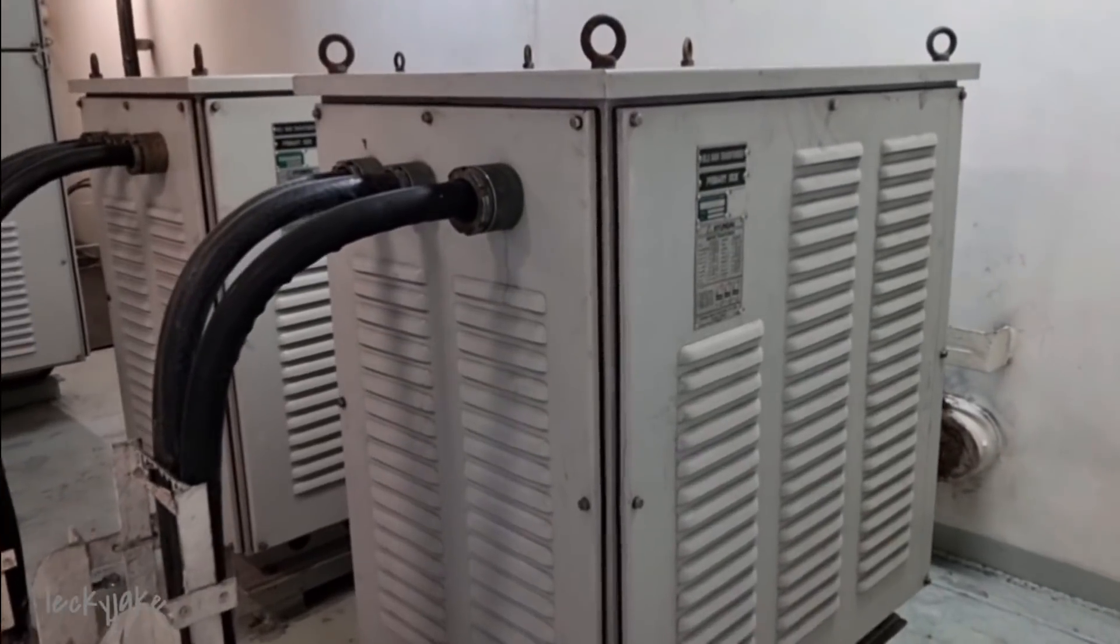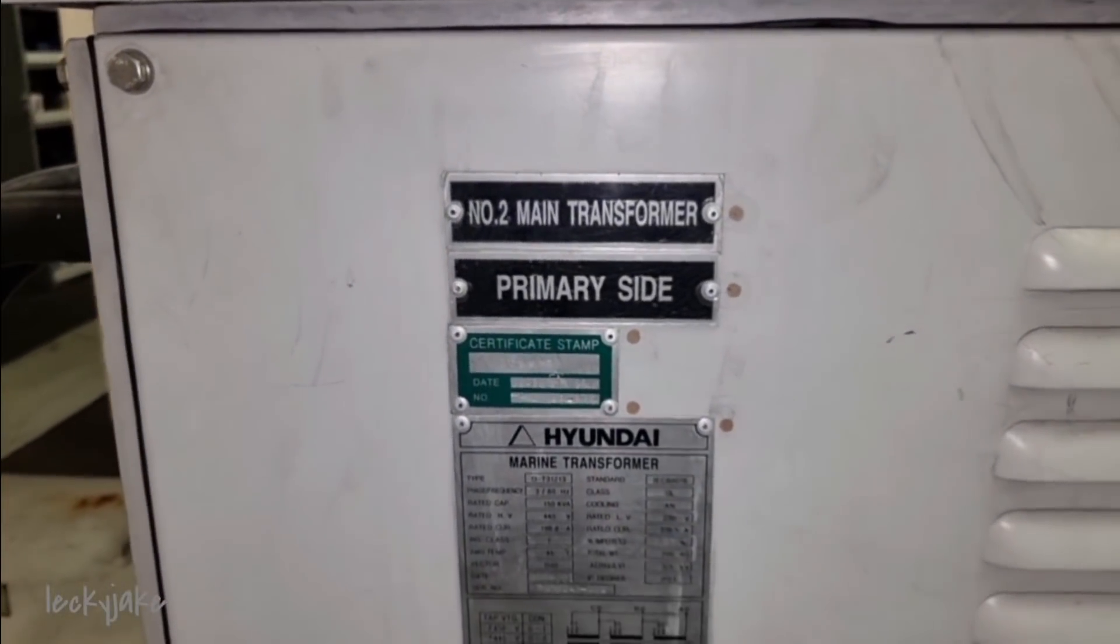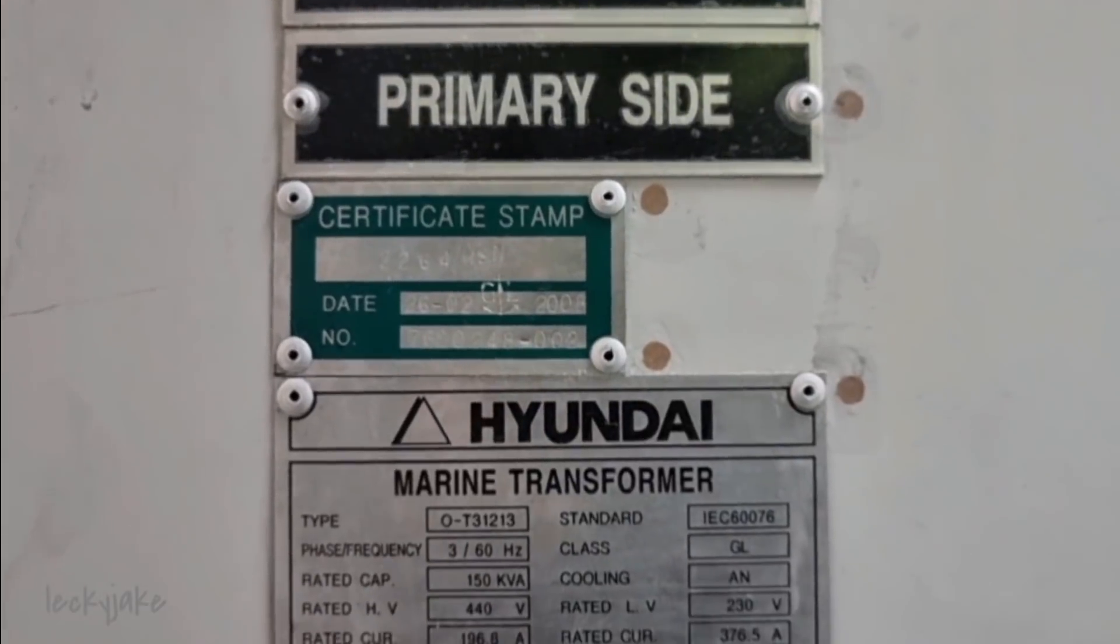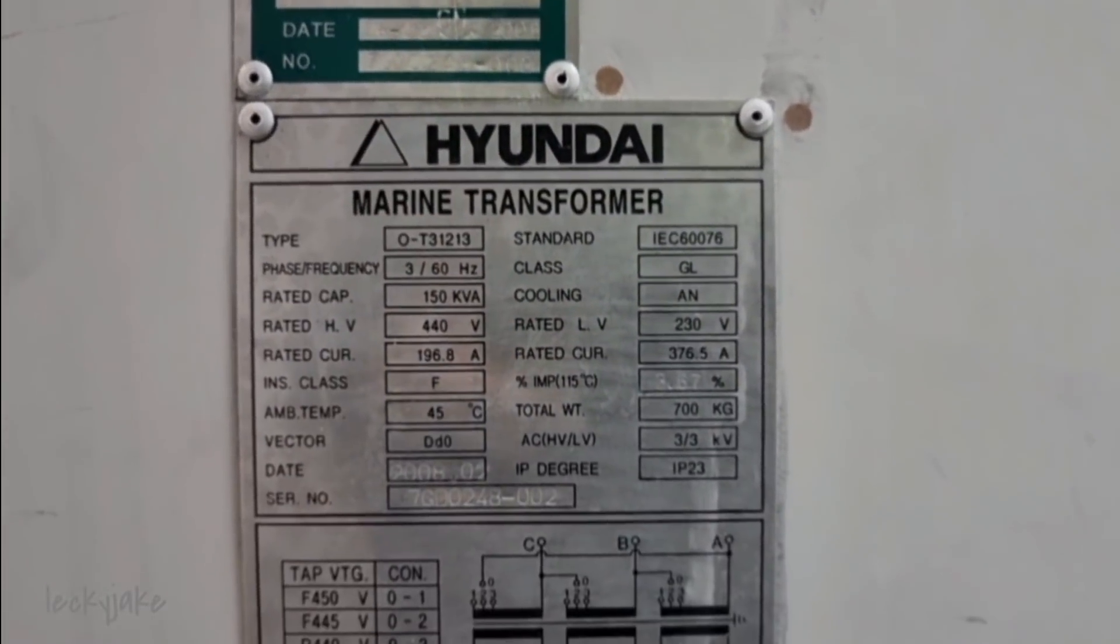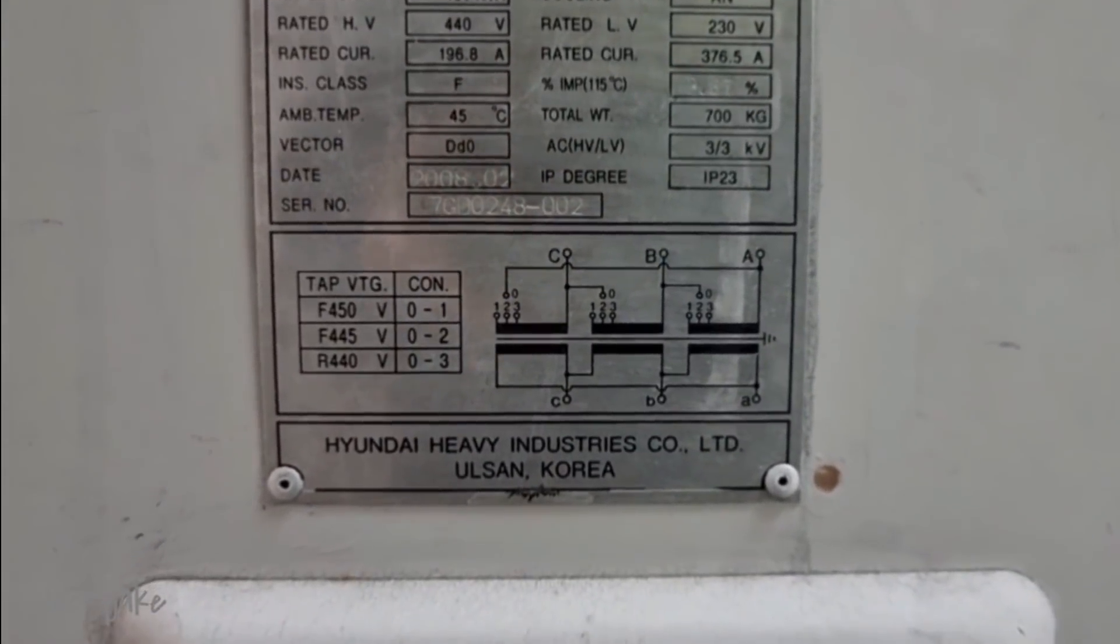So from 440 volts, it is transformed down to 230 volts via two 440 to 230 volts, 150 kilo volts ampere transformers. This is to supply the main switchboard 230 volts feeder section.